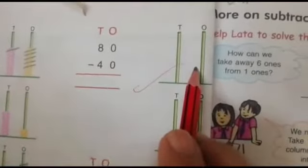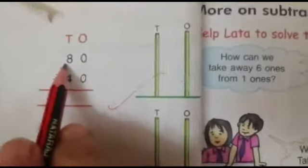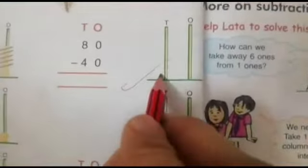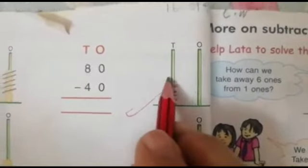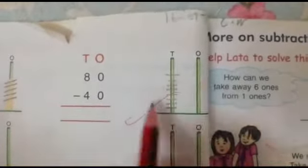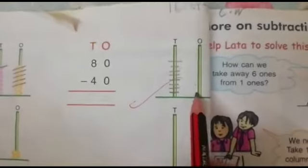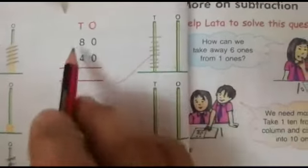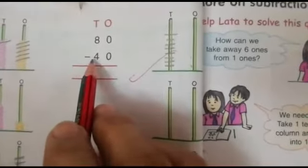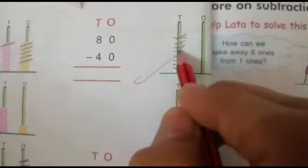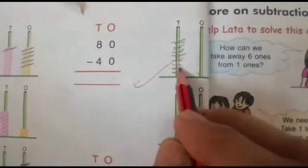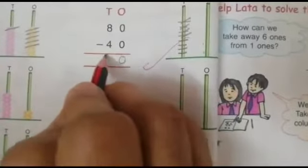Next is 80 minus 40. Now how many beads we have to draw in 1s place? No, nothing is there. 0 is there. It means we will not put any bead. How many 10s are there? 8. 1, 2, 3, 4, 5, 6, 7, 8. Now 0 minus 0. There is no 1s. It means we will not cut. And how many 10s we have to cut from 10s place? 4. 1, 2, 3, 4. How many are left? 1, 2, 3, 4. It means 80 minus 40 is equal to 40.